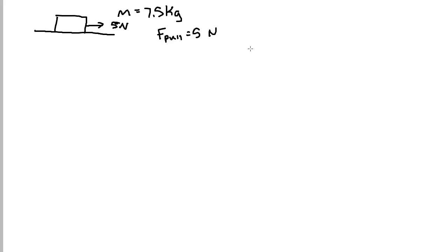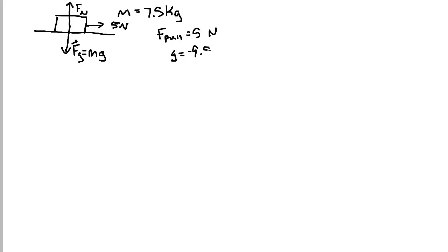If we neglect friction, the only other forces acting on this box are its weight — the force due to gravity — and the normal force, which is always perpendicular to your surface. To find the weight of an object, the force due to gravity equals mass times gravity, where gravity is negative 9.8 meters per second squared.